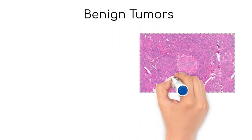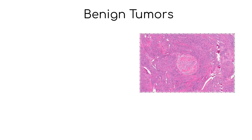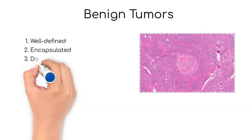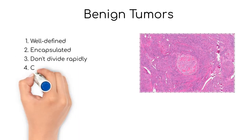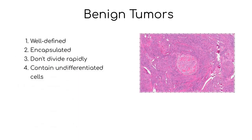Let's take a closer look at benign tumors. Benign tumors are well-defined and often encapsulated, whereas cancerous tumors have irregular margins. Benign tumors don't divide as rapidly as cancerous tumors — we say benign tumors have a low mitotic index, whereas cancerous tumors have a high mitotic index.